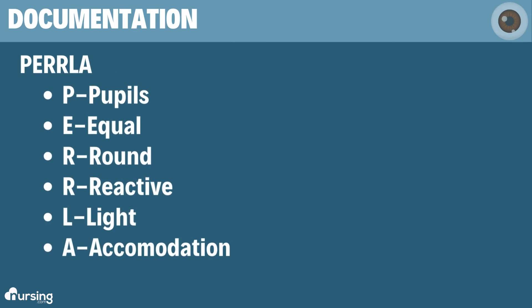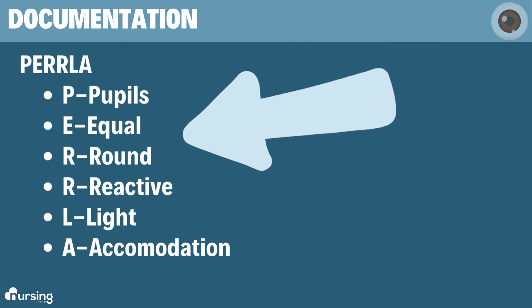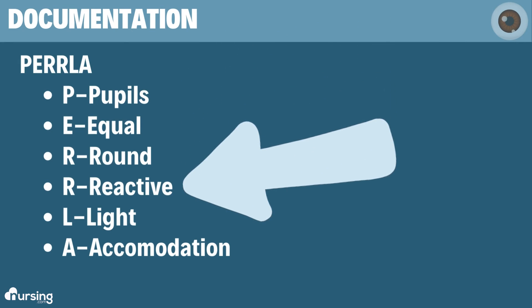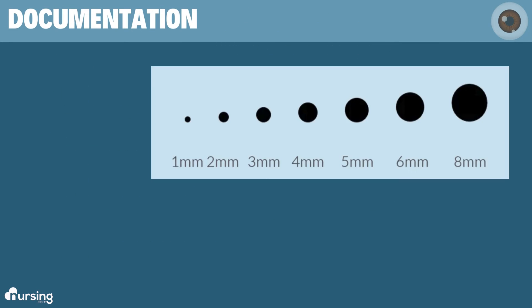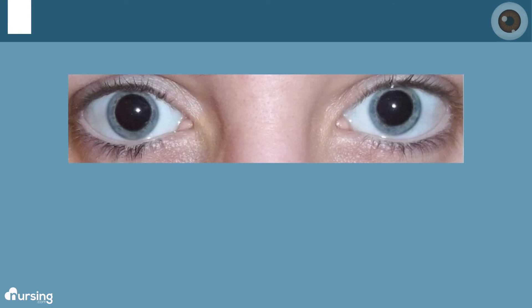If all of these things are present, you would document 'pupils equal, round, and reactive to light and accommodation,' state what size they are — for example, four millimeters — and usually note 'brisk.'